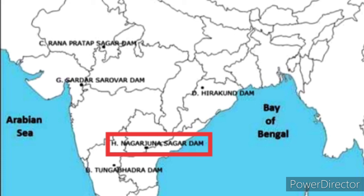Next is Nagarjuna Sagar Dam. It is built across the Krishna river at Nagarjuna Sagar on the border between Telangana and Andhra Pradesh.